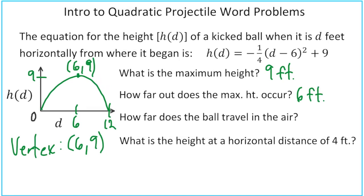How far does the ball travel in the air? If we double the 6, we would end up with our 12 feet. What is the height at a horizontal distance of 4? This would mean that we're evaluating h of 4.